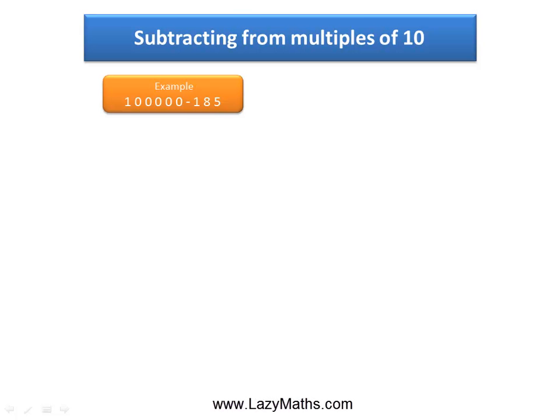Here's an example of subtracting from multiples of 10: 100,000 minus 185.